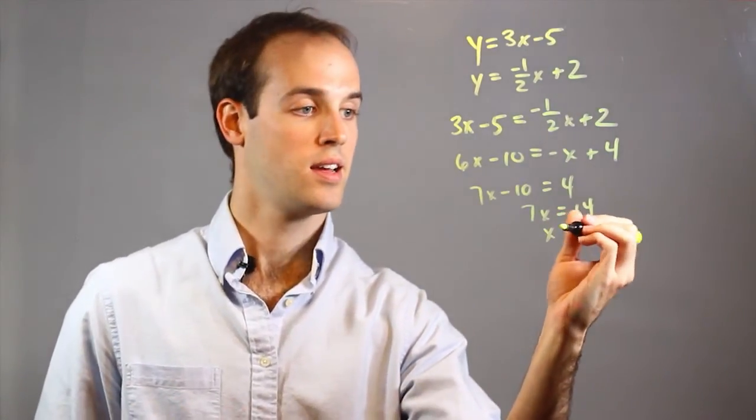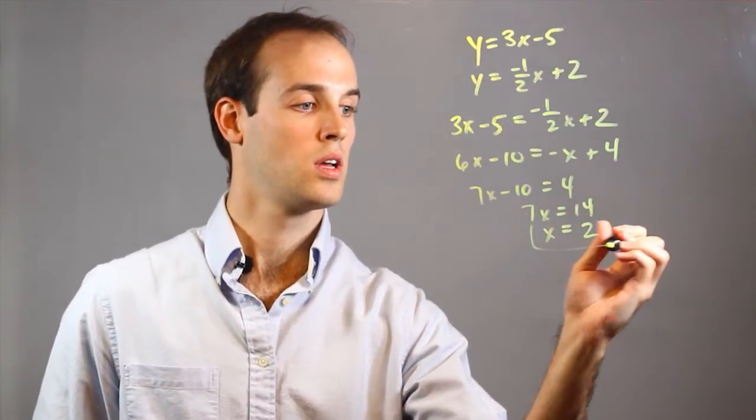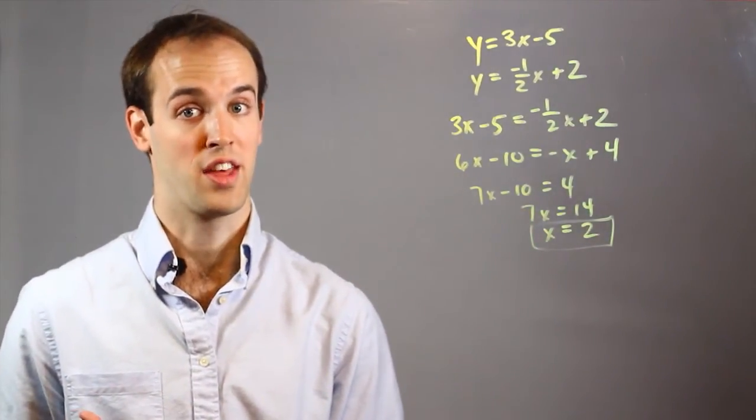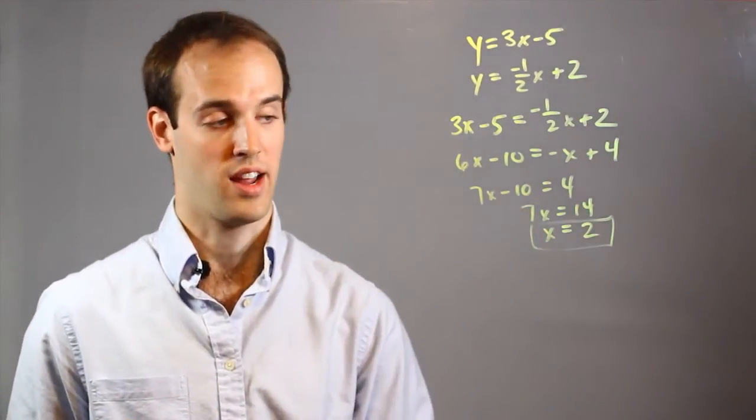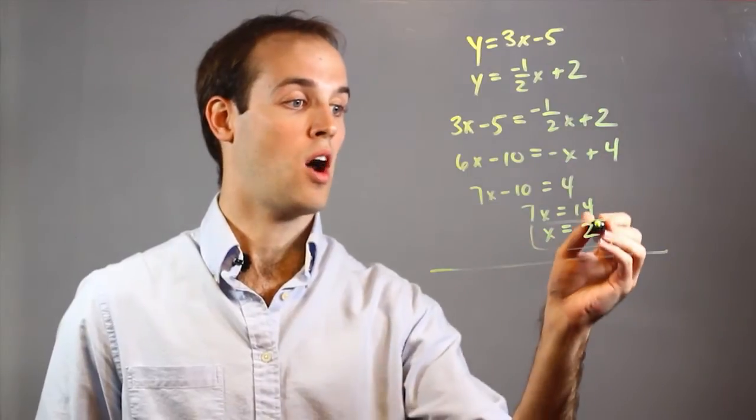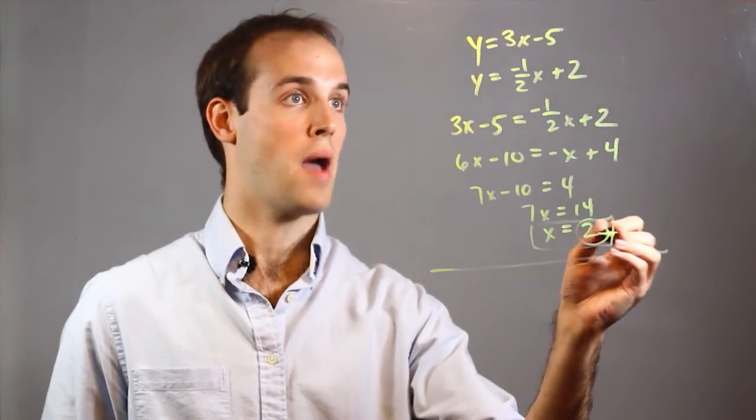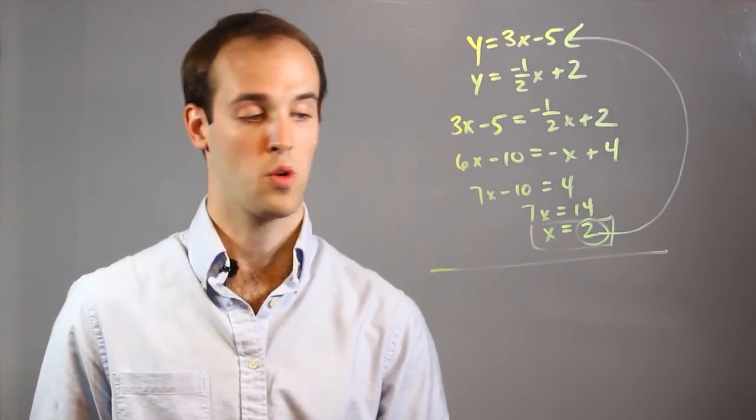7x equals 14. Lastly, I will divide both sides by 7. So now I have one half of the things I'm looking for. I have an x coordinate. To get my y coordinate, all I have to do is plug this value back into either of the two equations and solve for y.